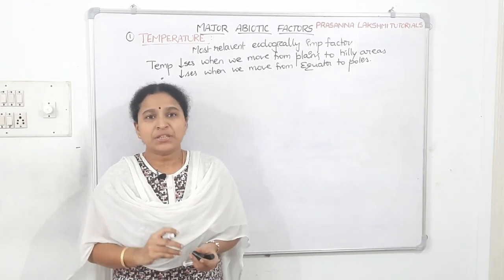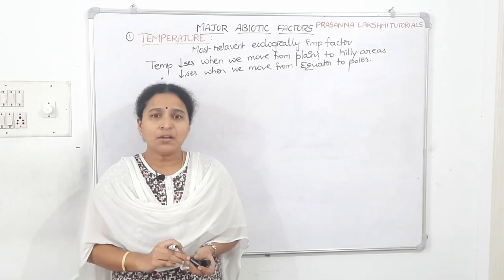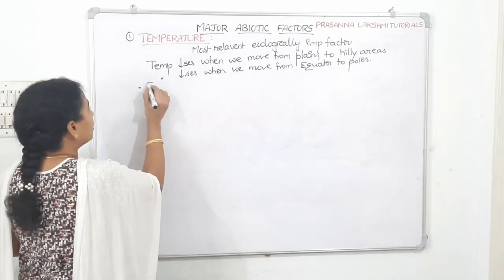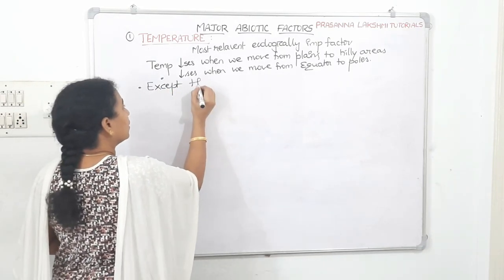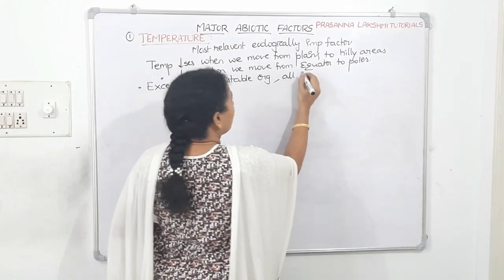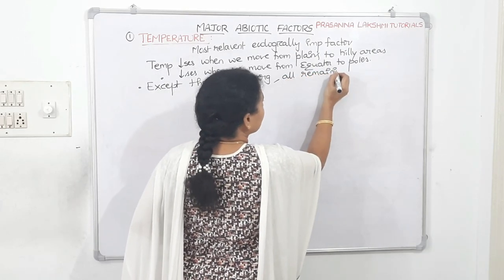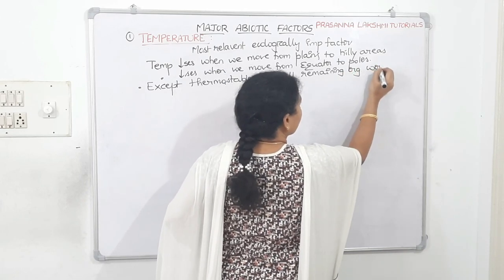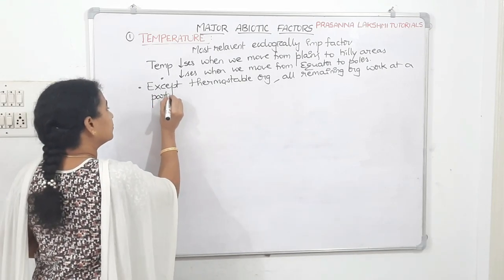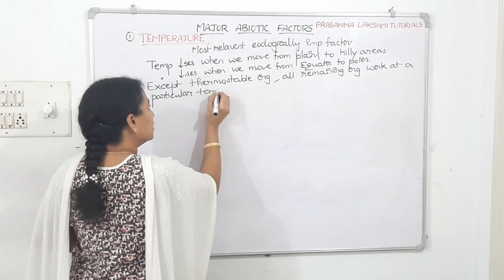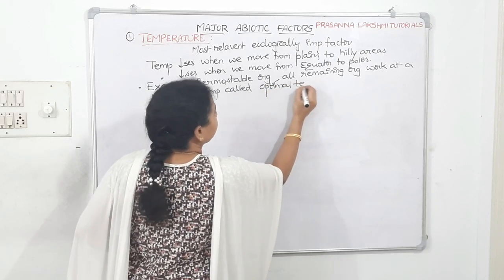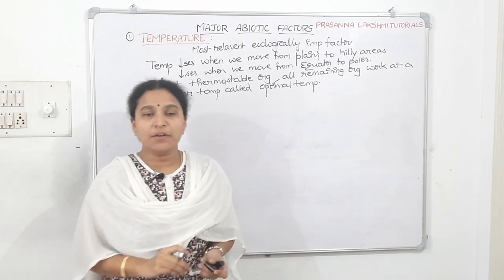Except for a few organisms which are thermostable or thermotolerant, all other organisms work under certain conditions called optimal conditions. So except thermostable organisms, all remaining organisms work at a particular temperature which is called the optimal temperature.